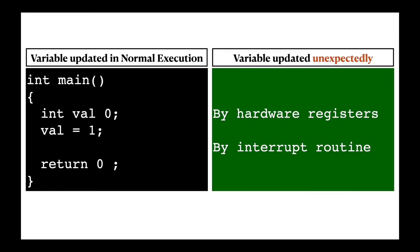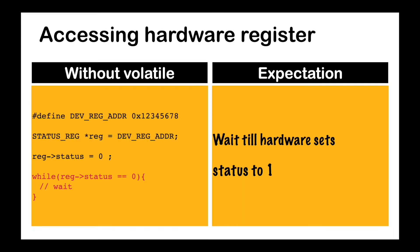There are very popular use cases for volatile. The first one is accessing hardware registers. Assuming a register address is 0x12345678, and this register holds a status and some data, this register value might be changed by hardware.